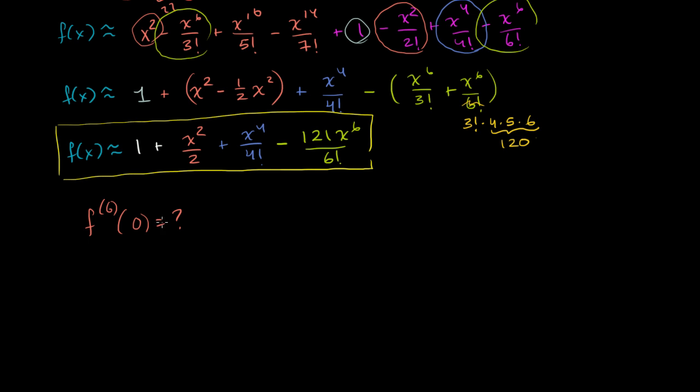Well, if you think about the Taylor series centered at 0 or approximated around 0, the sixth degree term in the Taylor series approximation of f is going to be the sixth derivative of f evaluated at 0 times x to the sixth over 6 factorial. This is going to be the sixth degree term in the Taylor series.